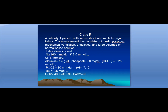Lab data: sodium 130, potassium 3, chloride 111, albumin 1.5 — low albumin. ABG values: bicarbonate very low at 9, partial pressure of carbon dioxide 13, pH 7.1, base deficit minus 25. The patient is on mechanical ventilation with FiO2 40%, partial pressure of arterial oxygen 95, oxygen saturation 98%.